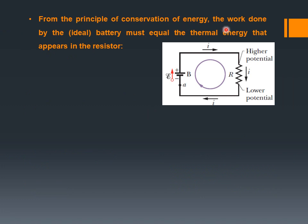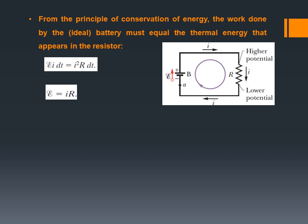From the principle of conservation of energy, the work done by the ideal battery must equal the thermal energy that appears in the resistor. The work done by the battery on the charges must equal the thermal energy appearing in resistor R. So we can write EMF times I times DT equals I squared R times DT. Cancelling DT on both sides and one I from each side, this becomes EMF equals IR.